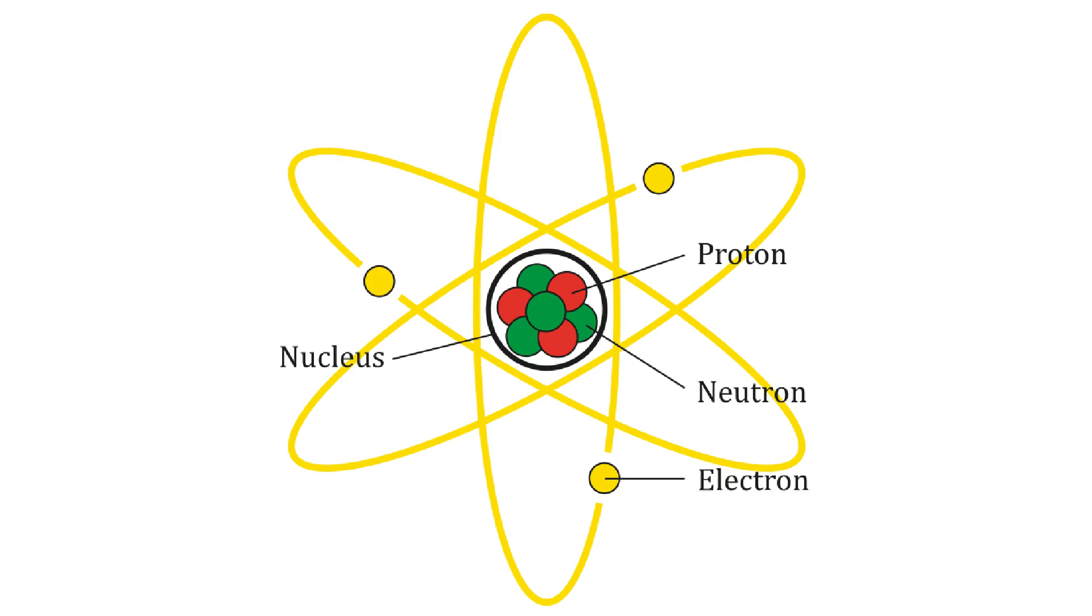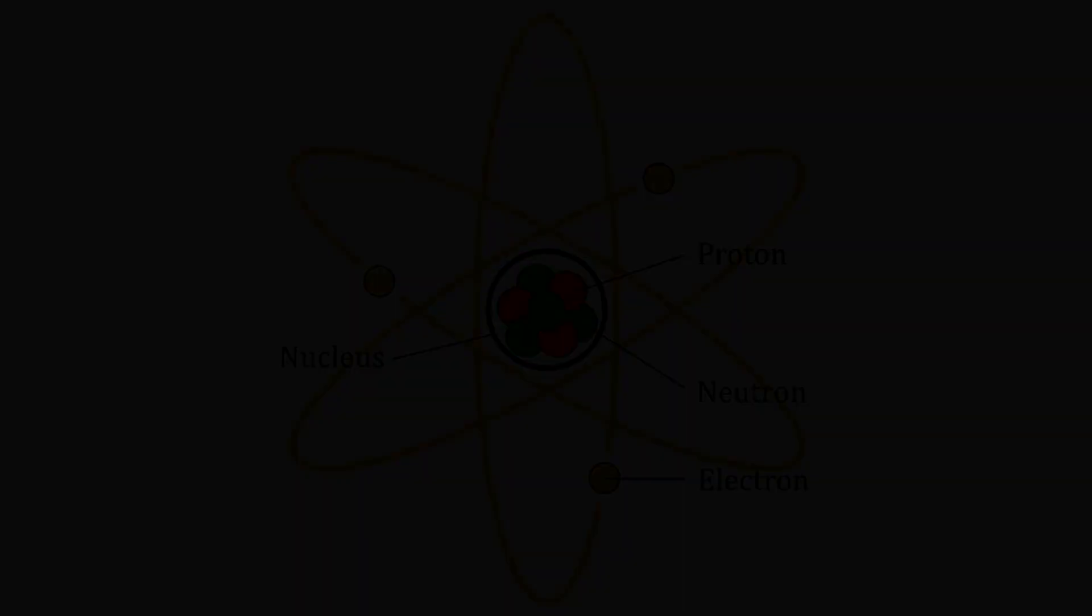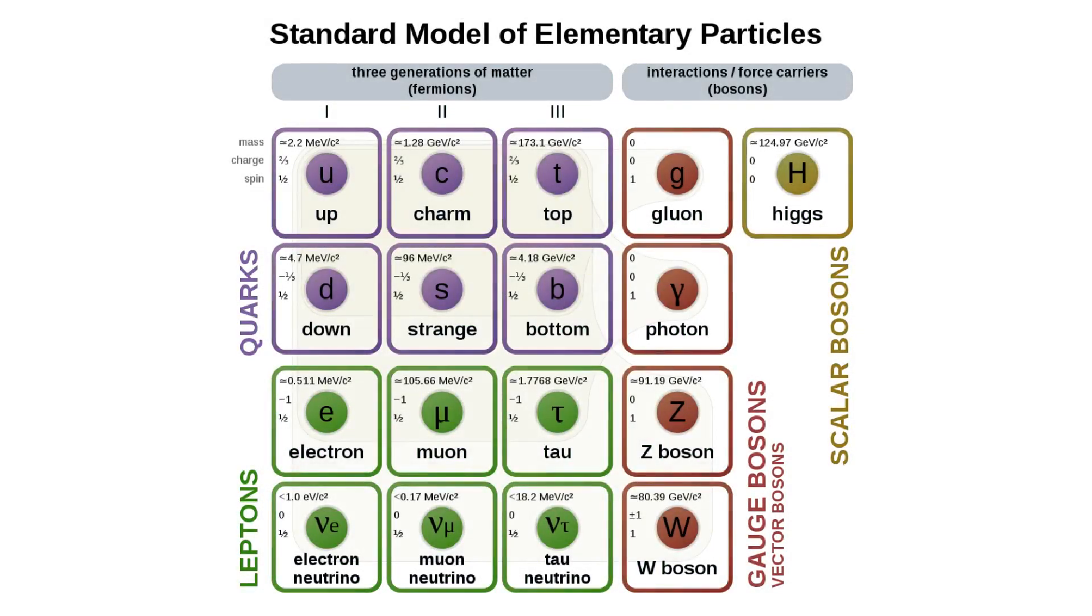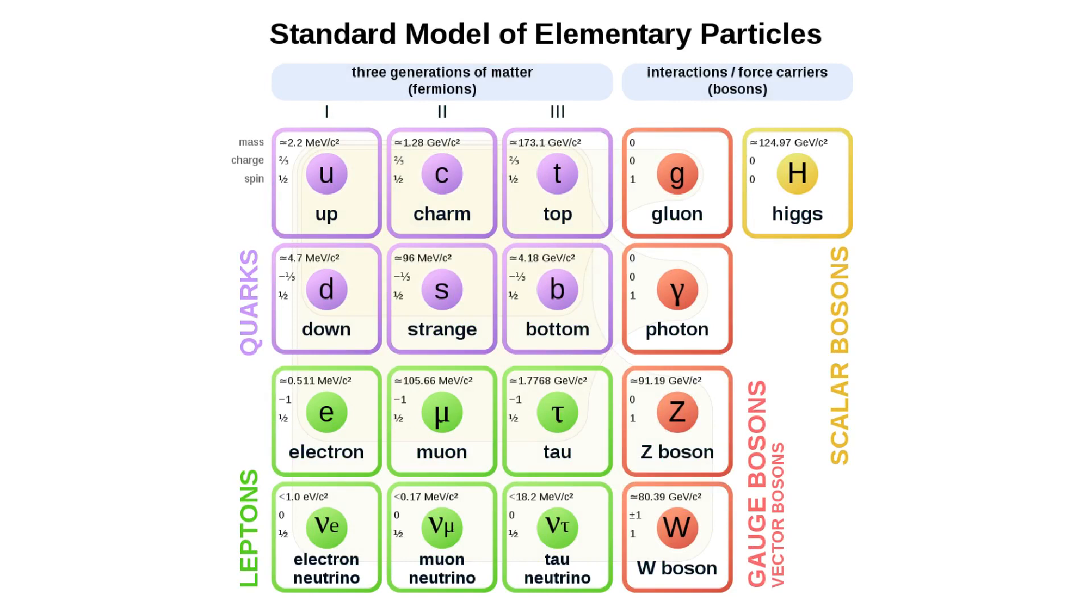Nucleons are themselves made of more fundamental particles called quarks. The standard model contains 17 known elementary particles.